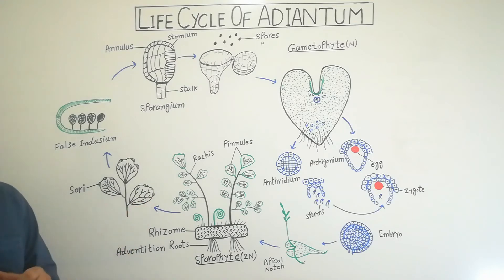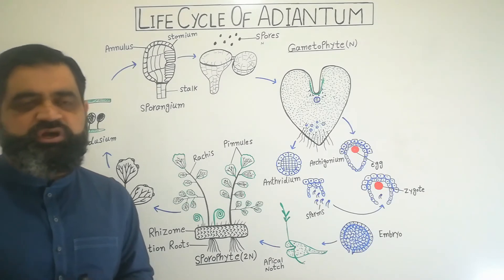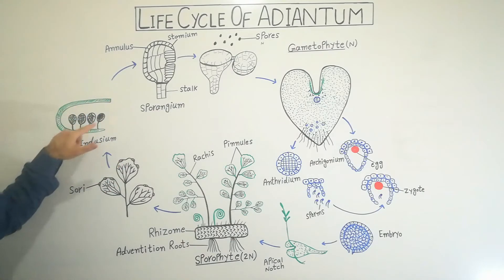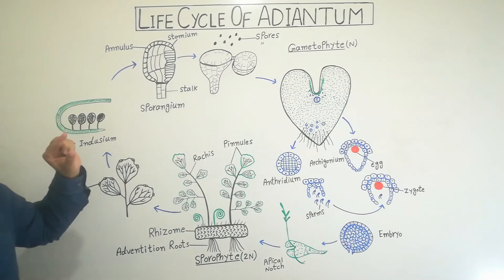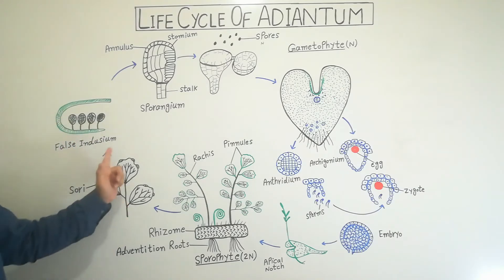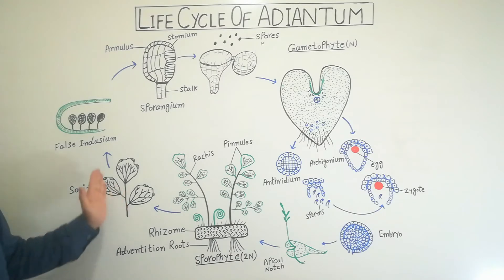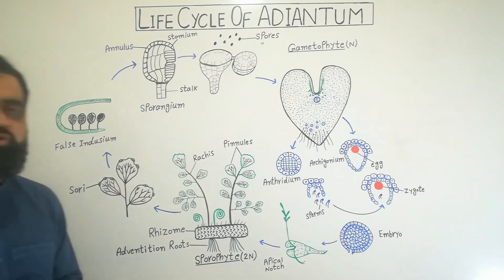The second important feature of these pinnules is that their margins are bent slightly, forming a false indusium. The bent margin of the leaf forms the false indusium, which contains a group of sporangia known as a sorus. All the pinnules on their margins contain sori — the plural of sorus. So many sori, or groups of sporangia, are located on the margins of the pinnules, distributed all over the leaves of this plant.